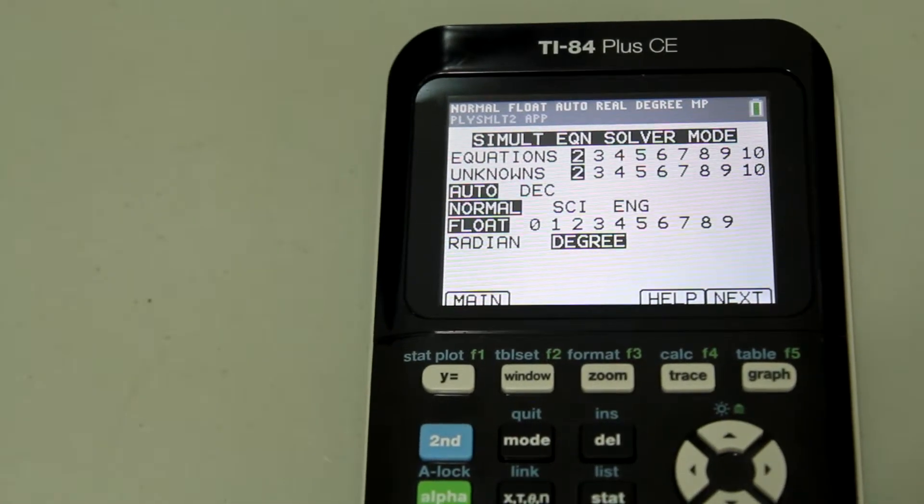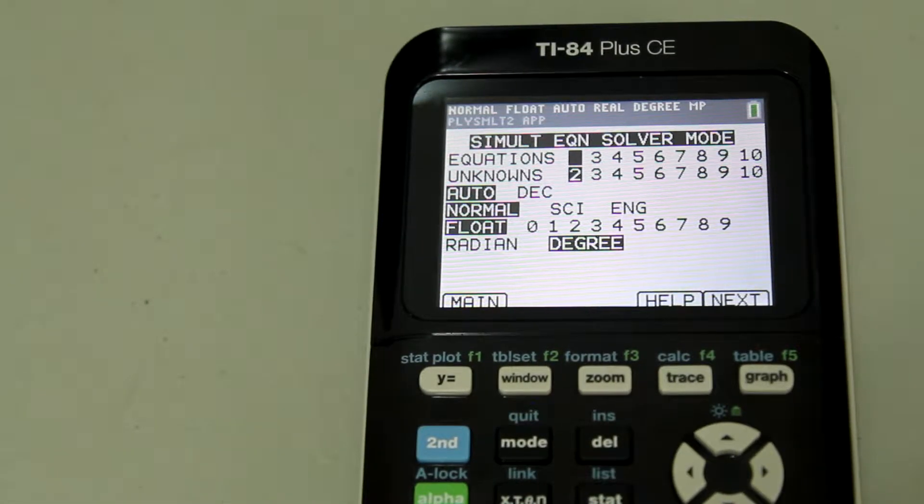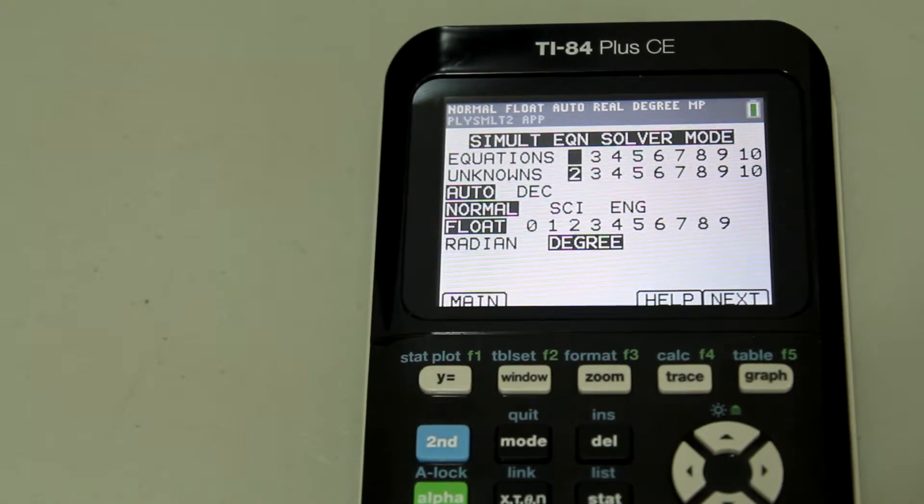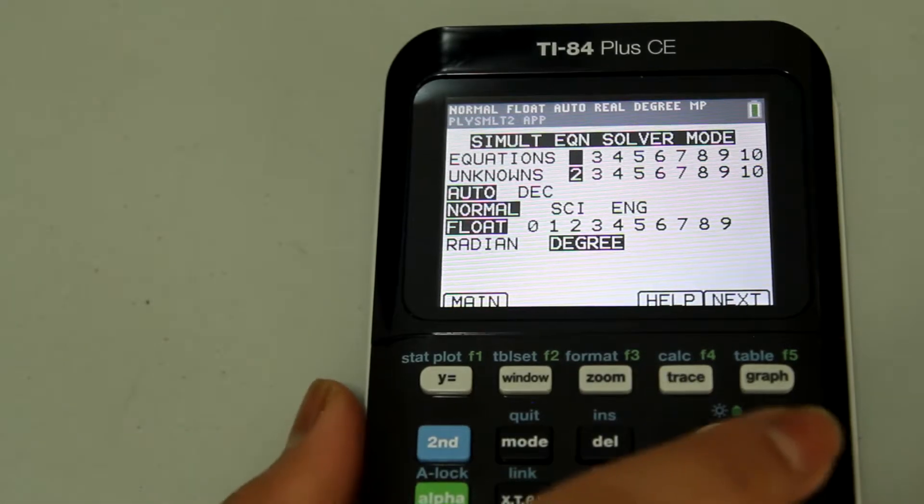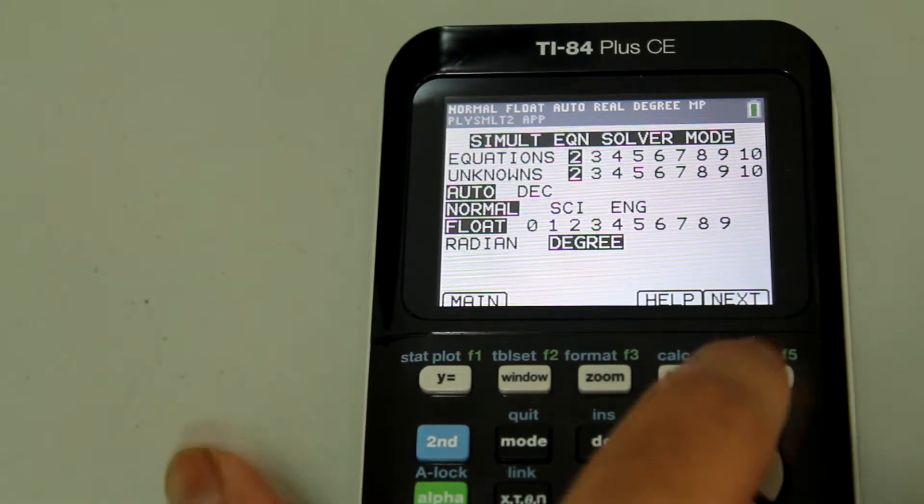This is where you're telling the calculator how many equations you're solving and how many unknowns there are. So in our case, we have two equations and two unknowns, which is the x and the y. So we're just going to leave it as 2 and 2. And now to go to next, you're going to hit the next button by selecting the graph button.